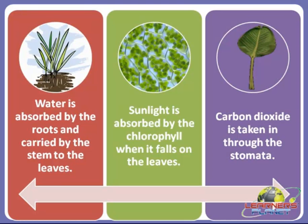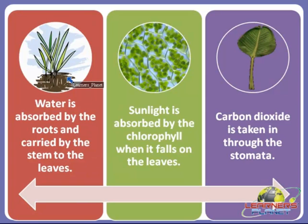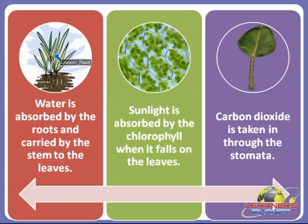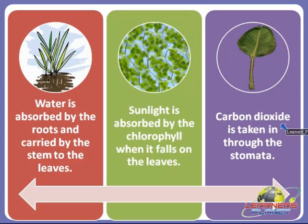Now we will study about the process of obtaining these raw materials — water, sunlight, and carbon dioxide. First of all, water is absorbed by the roots of a plant and then it is carried by the stem to the leaves. Sunlight is absorbed by the chlorophyll when it falls on the leaves, and then carbon dioxide is taken in through the tiny holes on the leaves called stomata.